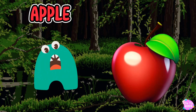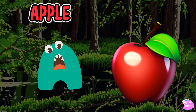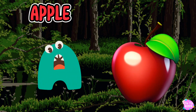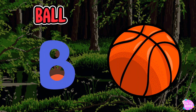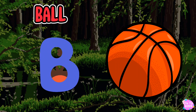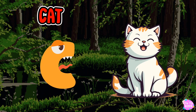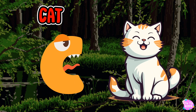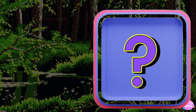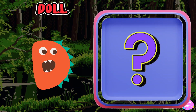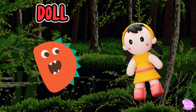A is for apple, a-a-apple. B is for ball, f-f-ball. C is for cat, c-c-cat. D is for doll, d-d-doll.